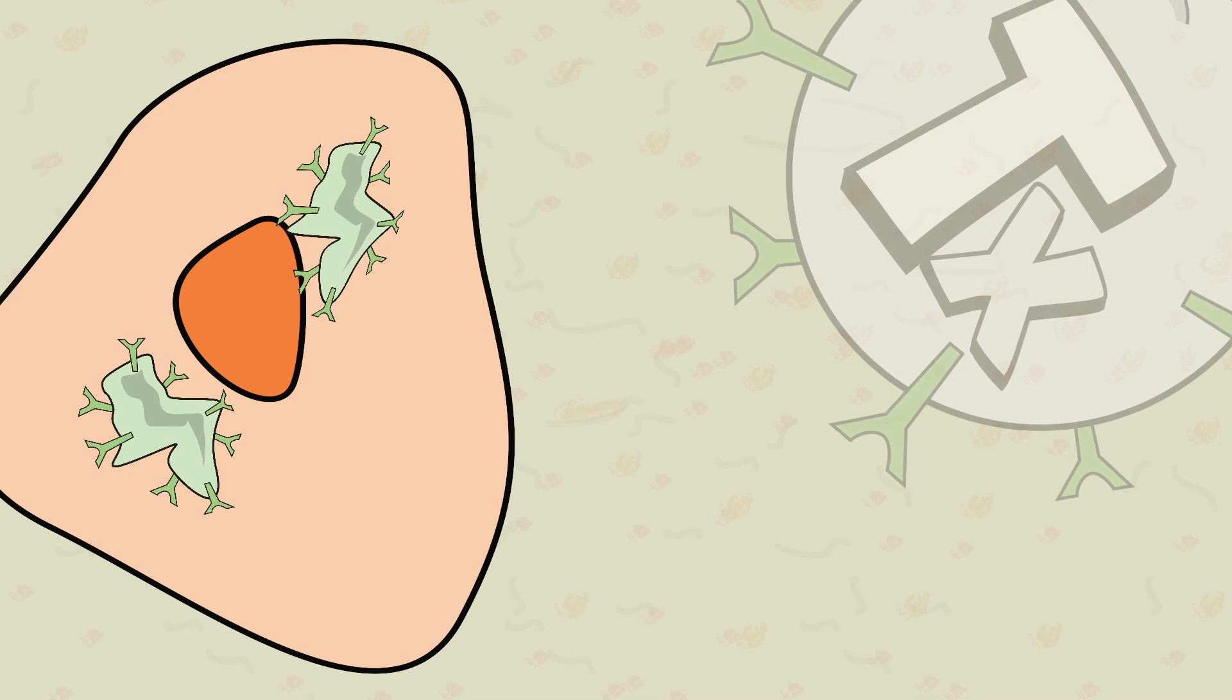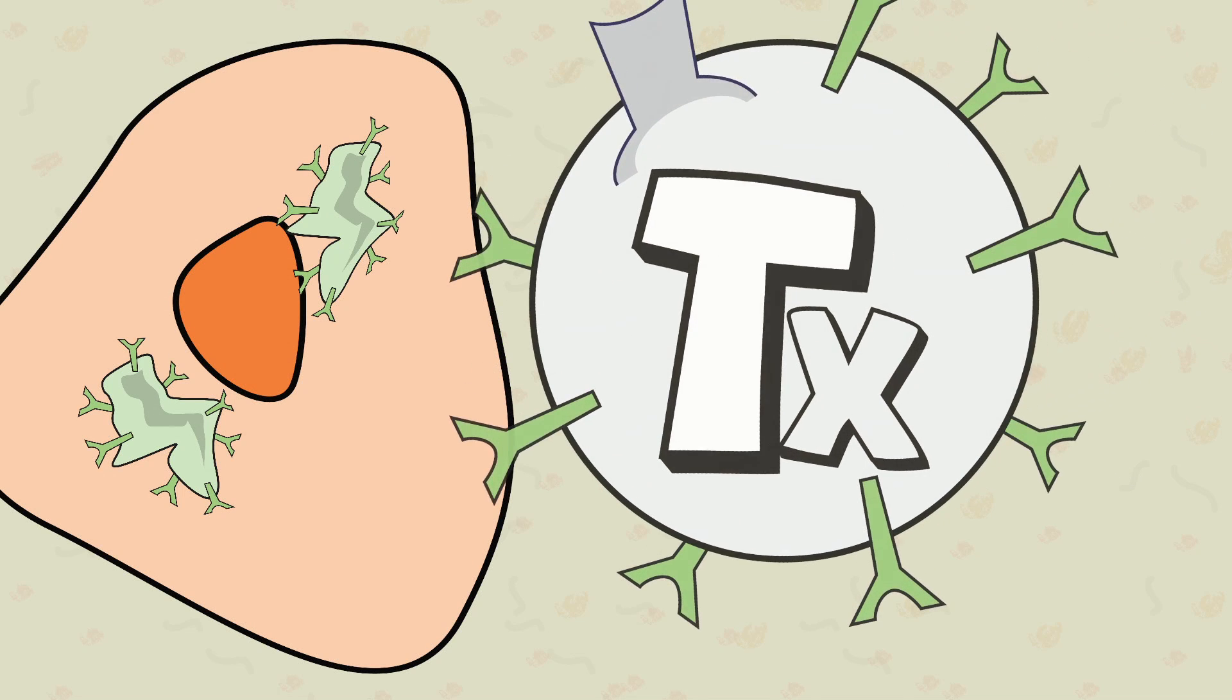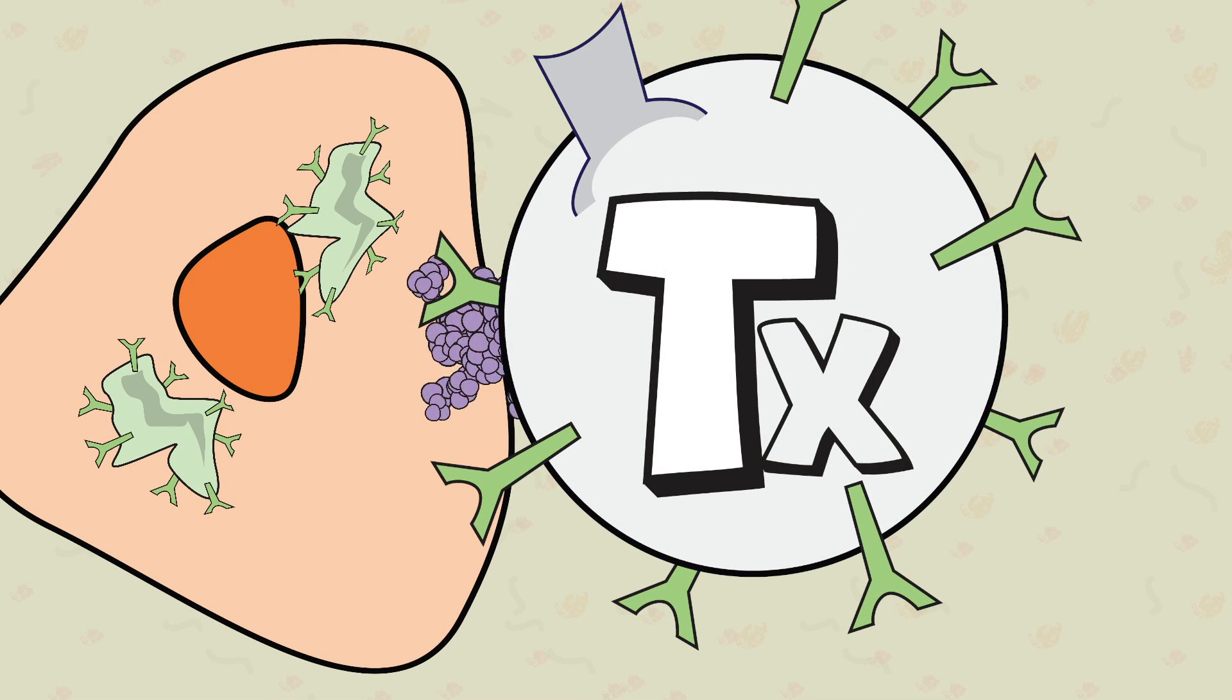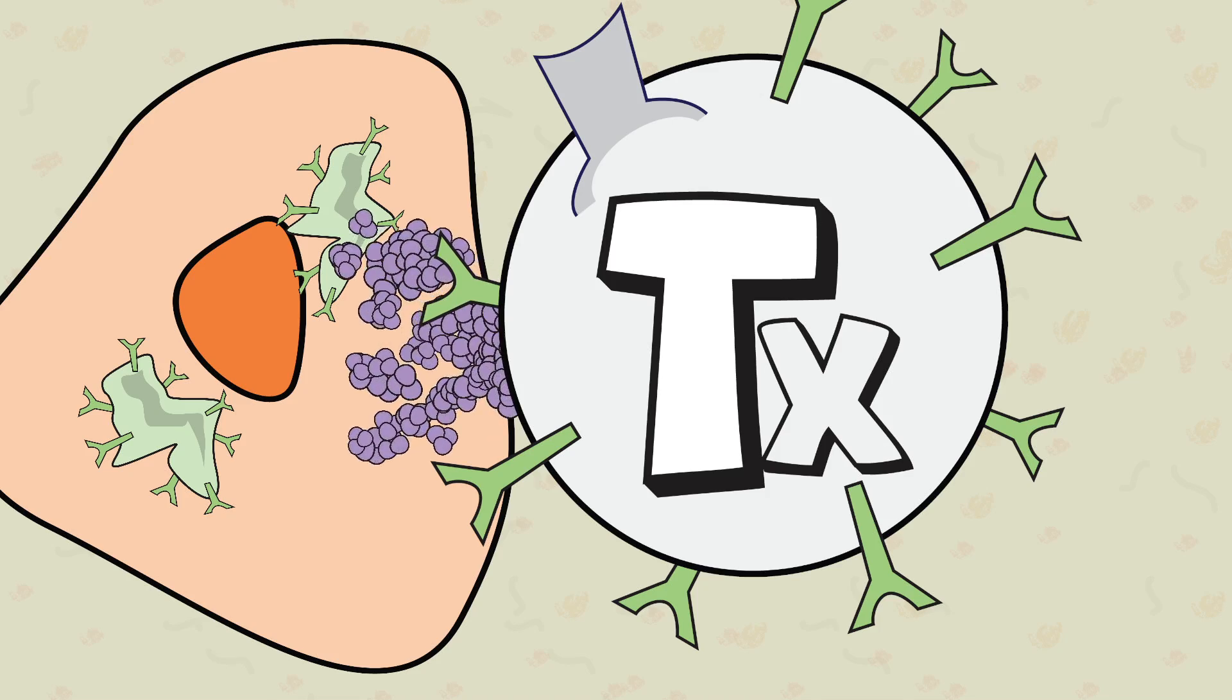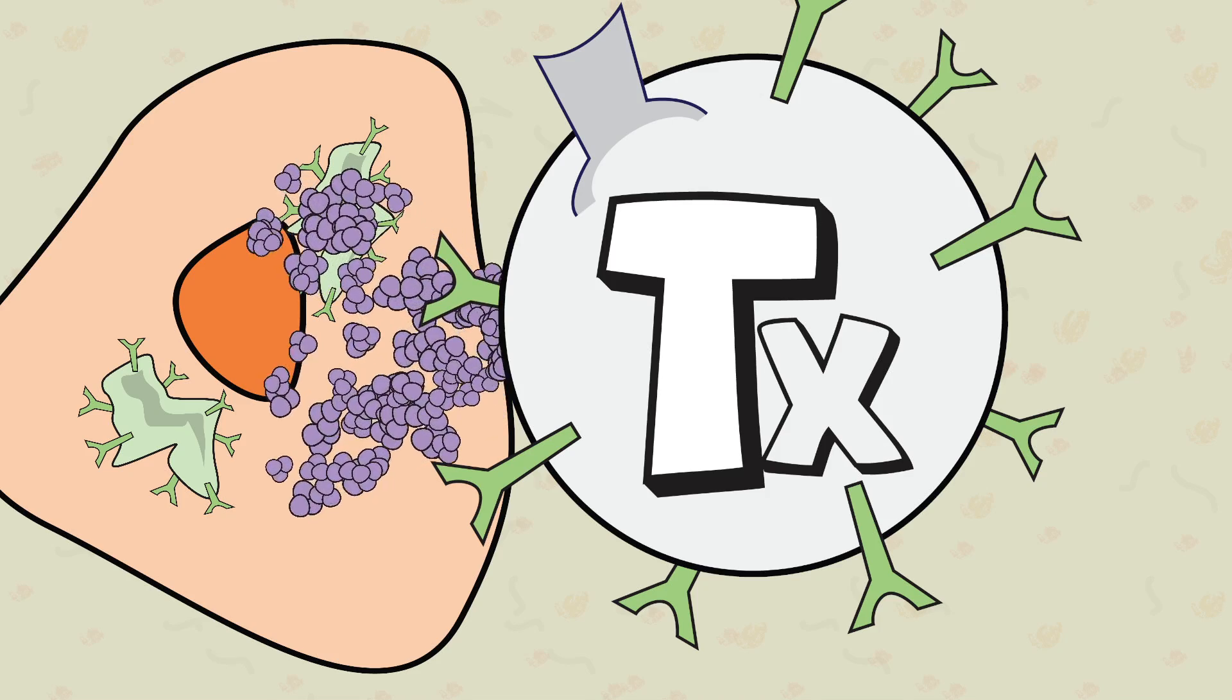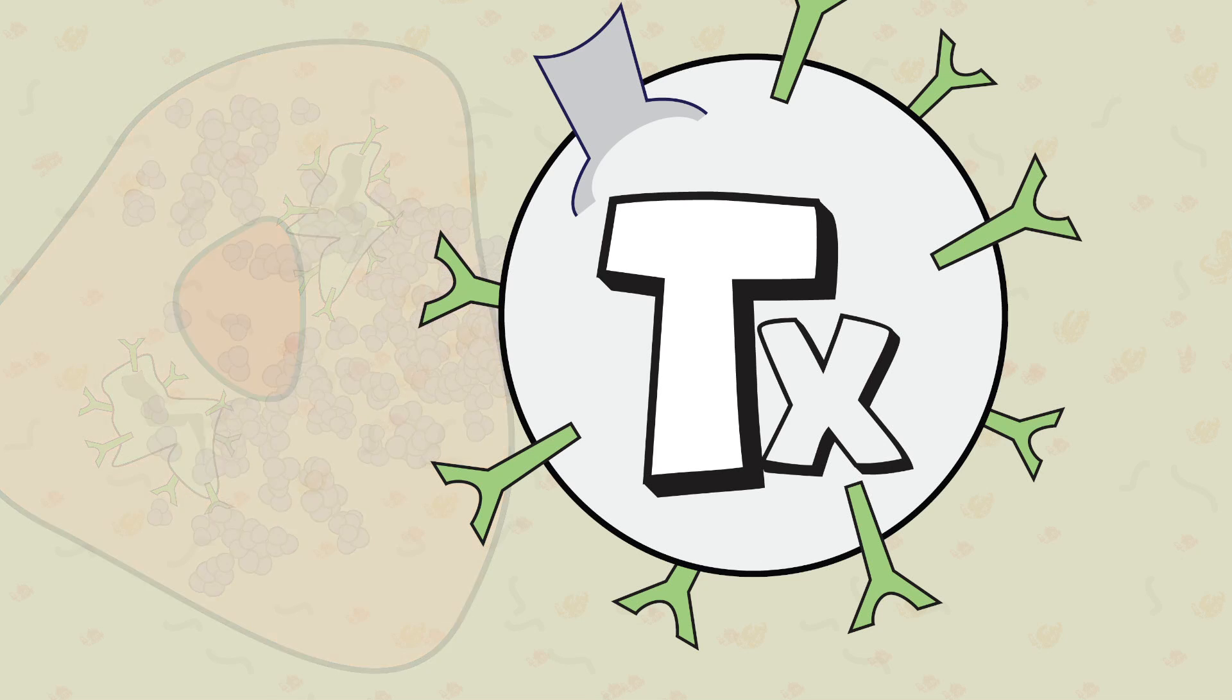Cytotoxic T cells then come into play by targeting the infected human cells. By releasing toxic proteins, the cytotoxic T cell causes the ultimate destruction and death of the infected human cell. In addition, cytotoxic T cells also target defective human cells, such as cancer cells.